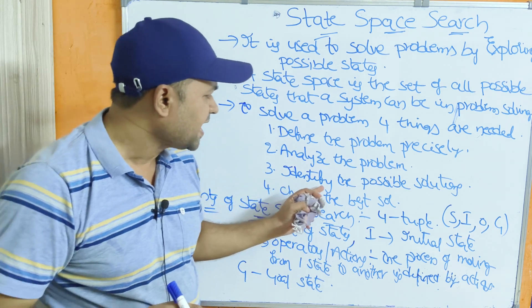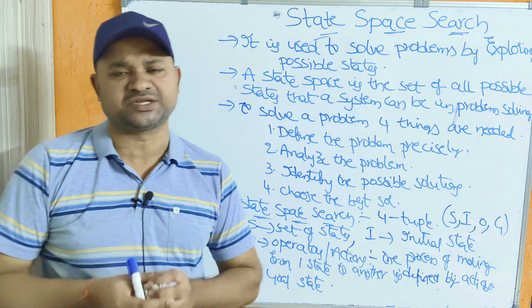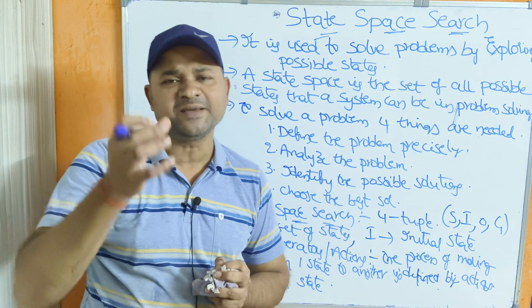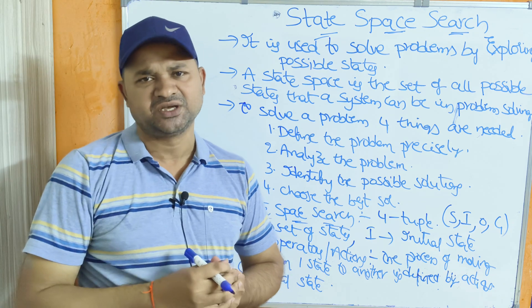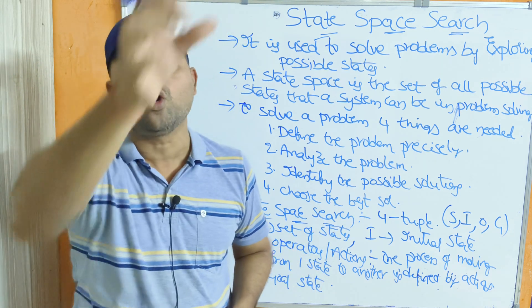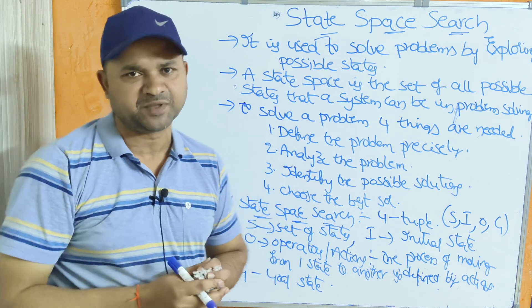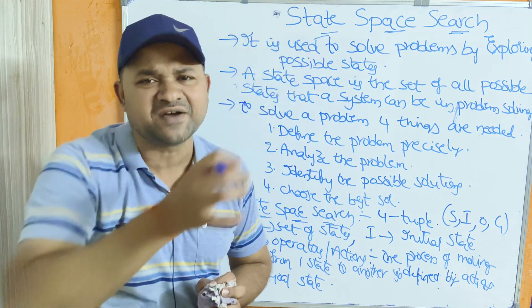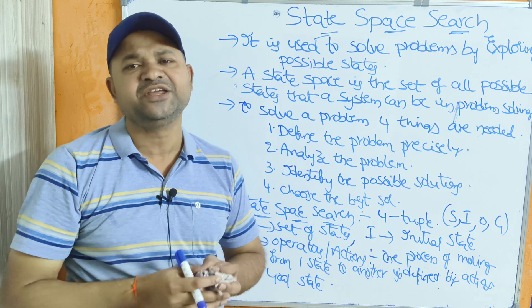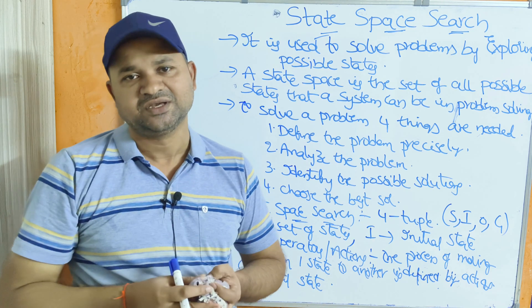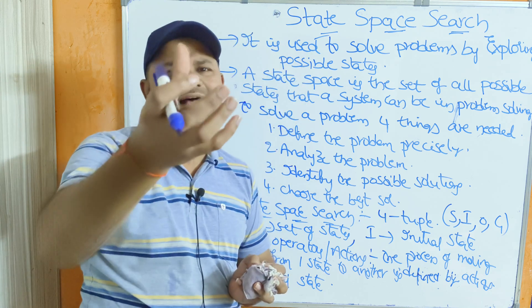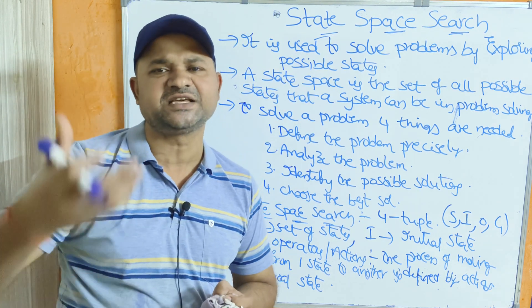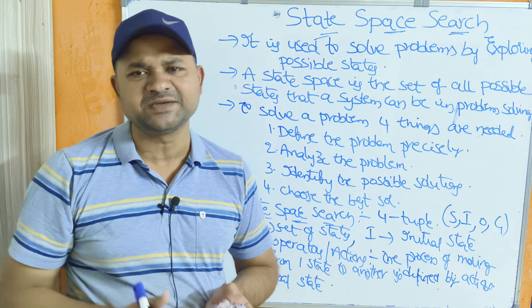The third point is: identify the possible solutions. Sometimes a problem may have multiple solutions, so we need to identify all of them. Fourth: choose the best solution. Out of all available solutions, we choose the best one — generally, the best solution is the path which produces the least cost.